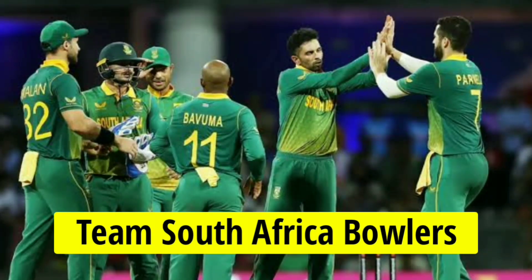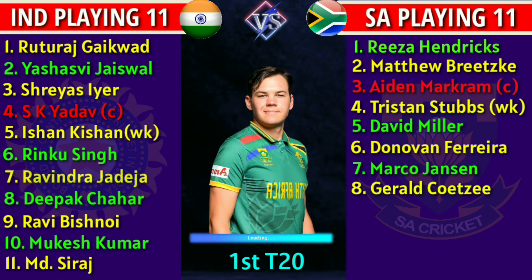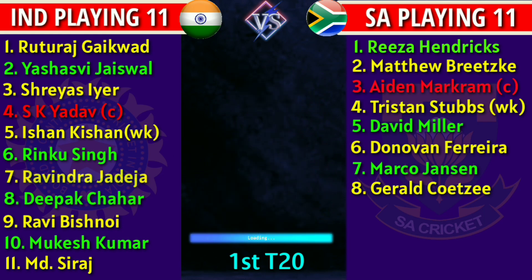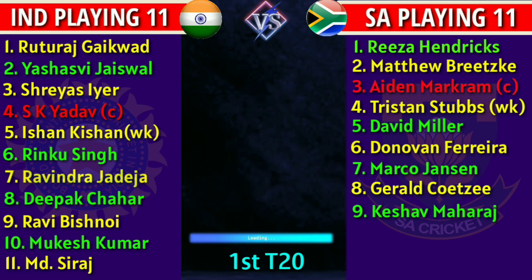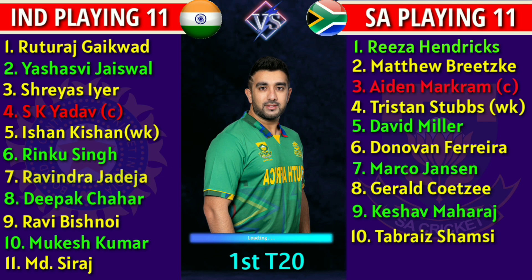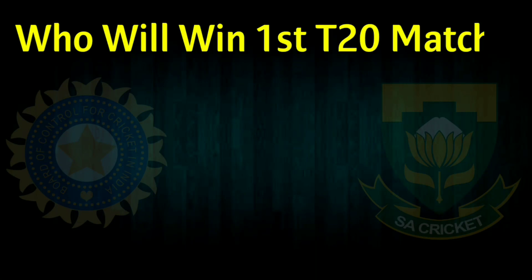South Africa Team Bowlers: 8. Gerald Coetzee — right-arm fast bowler, 9. Keshav Maharaj — left-arm spin bowler, 10. Tabraiz Shamsi — left-arm spin bowler, 11. Lizaad Williams — right-arm fast bowler.